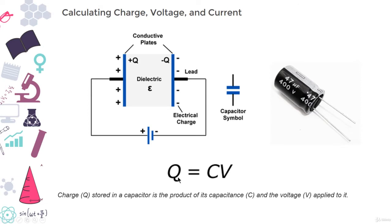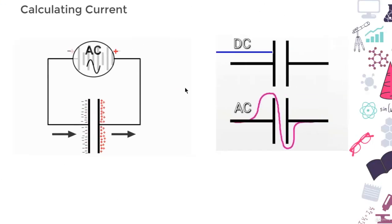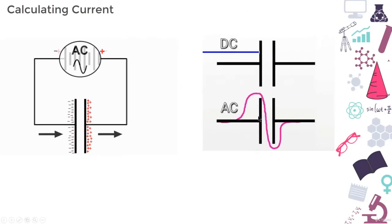We can take the charge voltage capacitance equation a step further to find out how capacitance and voltage affect current, because current is the rate of flow of charge. It's very important for you to know that all capacitors, regardless of their type, will block DC current to pass through.